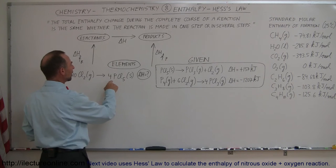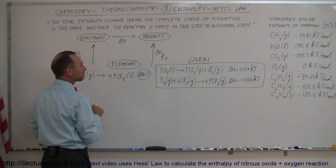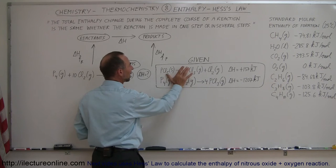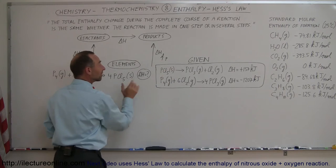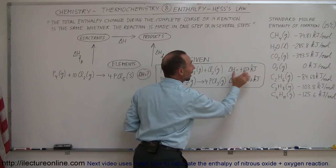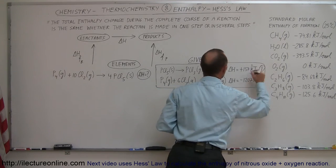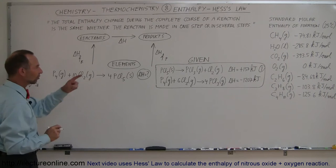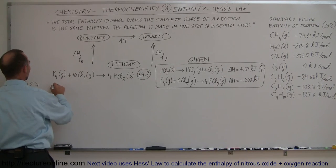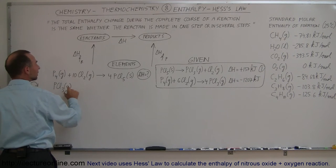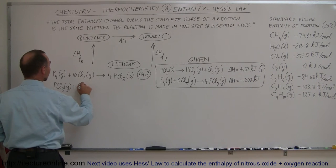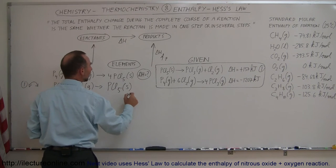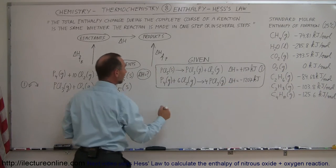Notice we want to end up with four phosphorus pentachlorides on the right side. Looking at reaction one, I see it has one phosphorus pentachloride. So if I take this and reverse this reaction, then I end up with phosphorus pentachloride on the right side. Of course, when you reverse the reaction, you have to change the sign on the enthalpy change. So let's start with reaction number one — we're going to reverse the products and the reactants, writing phosphorus trichloride plus chlorine gas producing phosphorus pentachloride solid.